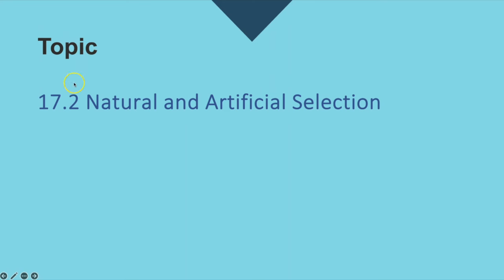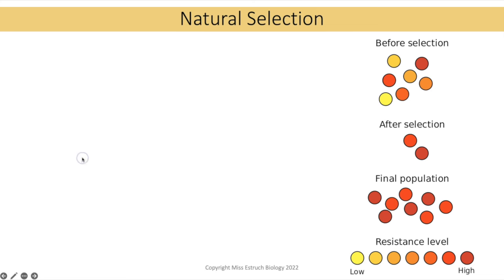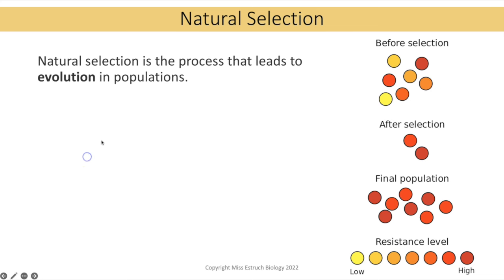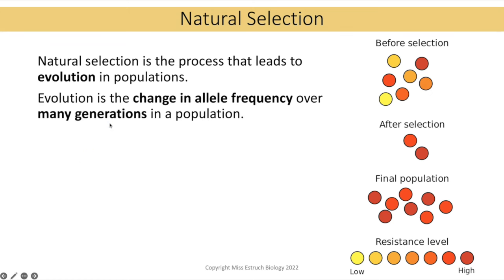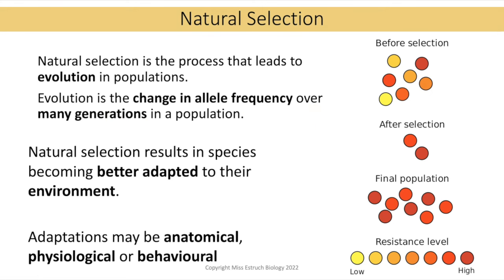Moving on to natural and artificial selection. Natural selection is the process that leads to evolution in populations, and evolution is the change in allele frequency over many generations in a population. Natural selection results in a species as a whole becoming better adapted to their environment, and those adaptations could be anatomical, physiological or behavioural.